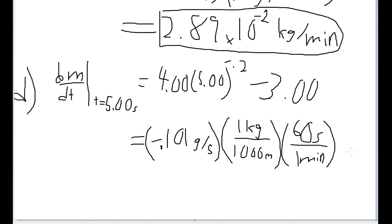Once again, I'm going to have to use the same conversions above to convert this from grams per second into kilograms per minute. And the rate we get is negative 6.05 times 10 to the negative 3 kilograms per minute. And that is our final answer for Part D.